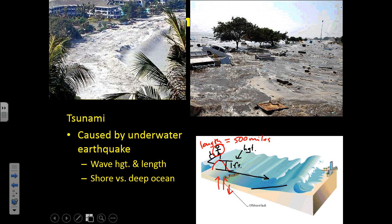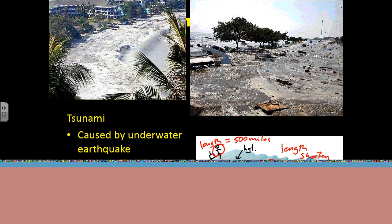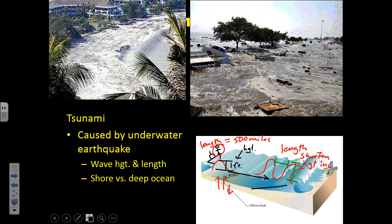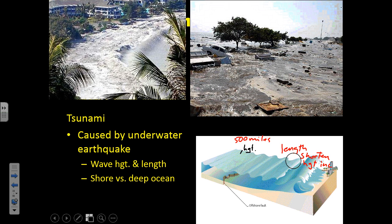What happens when the tsunami comes into shore is that the wavelength shortens, and as the wavelength shortens, the height increases. So we go from a longer wavelength and low wave height out at sea to a shorter wavelength and much greater wave height near shore. In the Sumatran earthquake and tsunami, they had wave heights up to 100 feet, and in Japan they were at least 30 feet in places and sometimes greater.